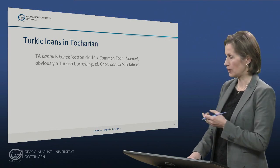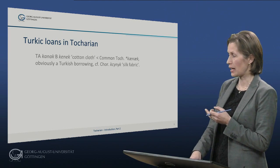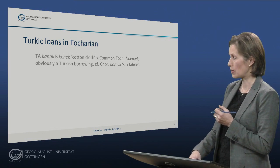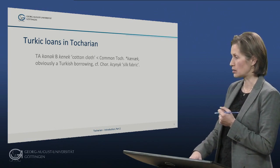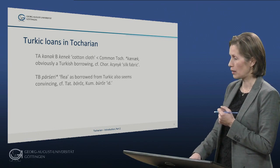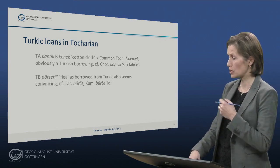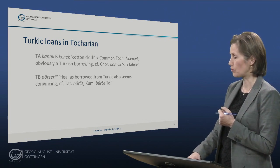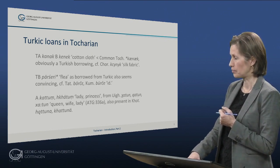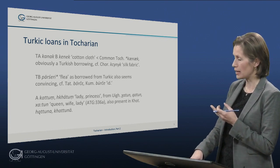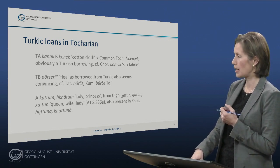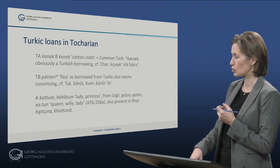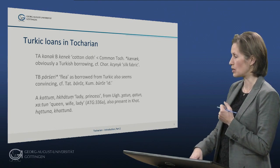We have Tocharian A and Tocharian B 'kenak', meaning cotton cloth, which is from a common Tocharian form and is obviously a Turkic borrowing. Another word is Tocharian B 'persuri', which means flea, and it is also very likely borrowed from Turkic. And of course the word for lady and princess, 'kattum' in Tocharian A, is from Uyghur 'kattun' and is also present as 'kattune'.